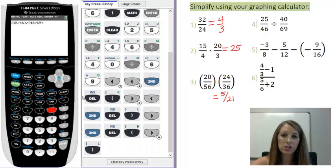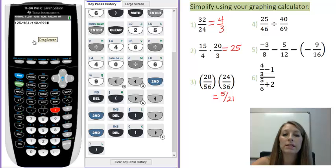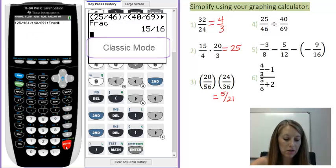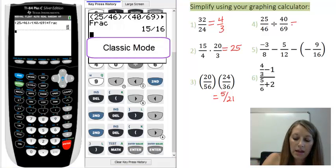I don't have to insert it. I can just type it in. So now my calculator knows what I'm actually trying to get it to do. 25 over 46 divided by 40 over 69. I'm going to go ahead and do my conversion here. And that gives me my answer of 15 over 16.